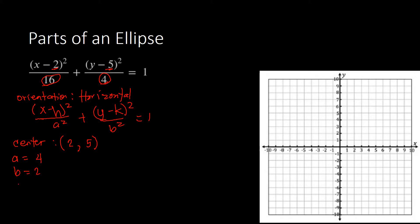Next, we look for c. Following our formula, c equals the square root of a squared minus b squared. Our a is 4, so 4 squared minus 2 squared. Simplifying: square root of 16 minus 4, which is square root of 12.